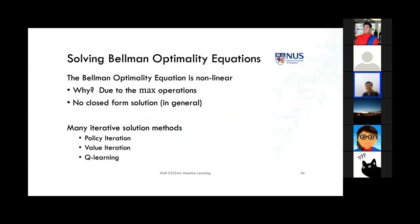Here's the bad news: MRPs and Markov chains have linear transitions — simultaneous linear equations solvable directly. But as soon as we introduce the max non-linearity, it has no gradient and can't be differentiated. So there's no closed-form solution for the MDP Bellman optimality equations — we can't solve the max terms analytically. We have to do iterations instead.